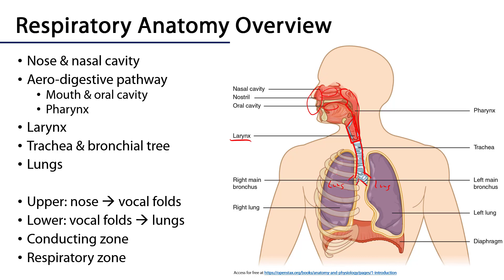The trachea bifurcates into primary bronchi that are part of the bronchopulmonary tree. They divide into secondary bronchi, then into tertiary bronchi, and then into various types of bronchioles that eventually support alveoli within the lungs where gas exchange occurs.